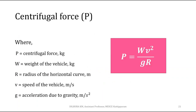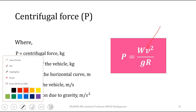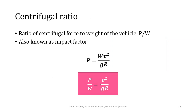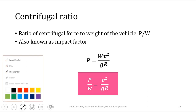Centrifugal force depends on two factors: velocity of the vehicle and radius of curvature. The equation for centrifugal force is P = WV²/gR, where W is the weight of the vehicle, V is velocity, g is acceleration due to gravity, and R is the radius of the horizontal curve. The unit of centrifugal force is kilograms. The centrifugal ratio is the ratio of centrifugal force to weight of the vehicle: P/W = V²/gR.